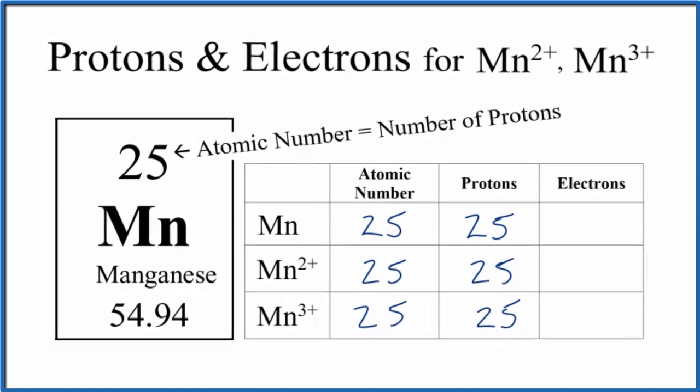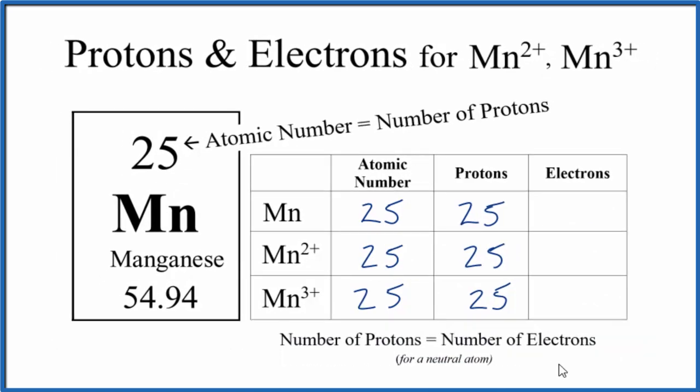When we have a neutral element, the number of protons equals the number of electrons. And we know on the periodic table there's no negative or positive sign. So this is neutral. So we'll have 25 protons, and that'll equal the number of electrons, 25.